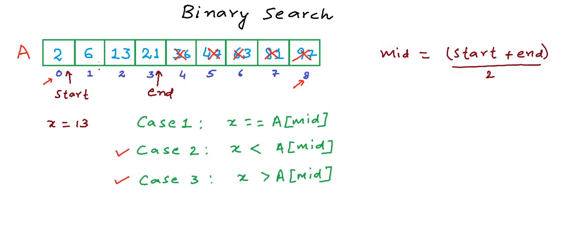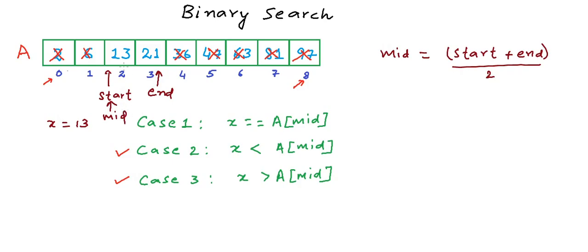We again find the middle element in the reduced search space: (3 + 0) / 2 = 1.5, taking the integral part gives index 1. Is it equal to x? No, 6 is not equal to 13. Is x less than the middle element? No, x is greater than the middle element. So this time we discard the middle element and all elements to its left, shifting start to mark the new search space. The new search space is index 2 to index 3. The middle element is (3 + 2) / 2 = 2.5, integral part is 2. Now x equals the middle element — we have found our element, search is done.